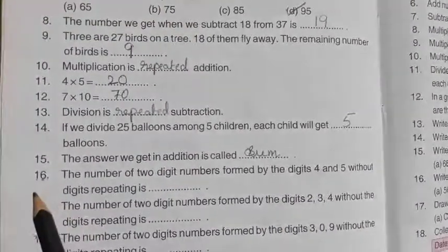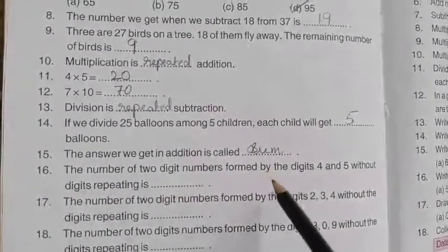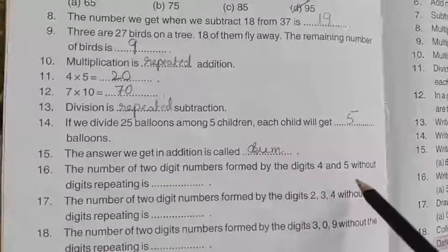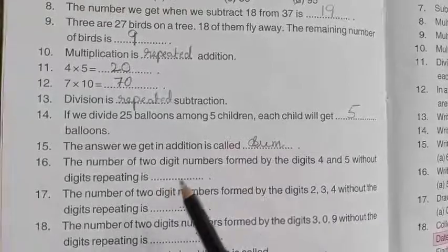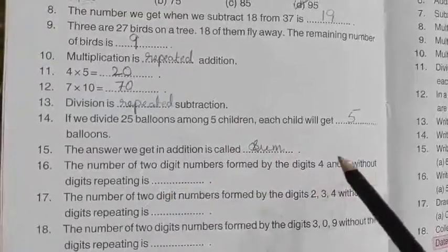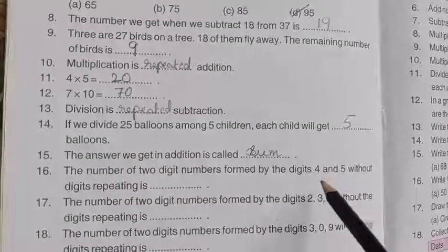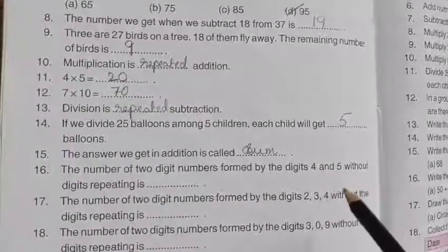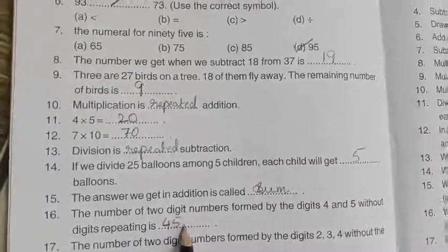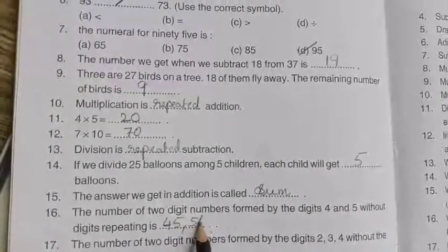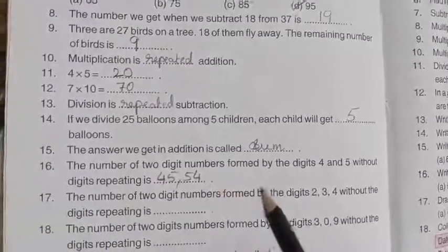Number, question number 16. The number of two digit numbers formed by the digits 4 and 5 without digits repeating is. So without repeating the two, we have to form a two digit number. That is the numbers are 4 and 5 without repeating. So how we can do children? Yes, 4 and 5, next 5 and 4. So here we have not repeated the digits. Okay, yes.